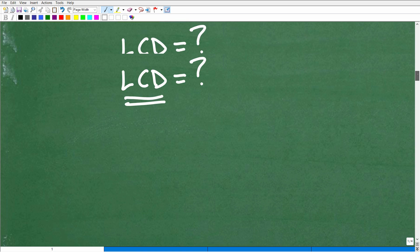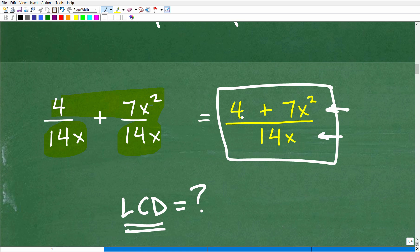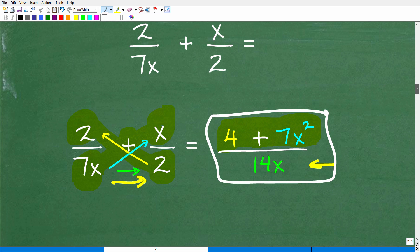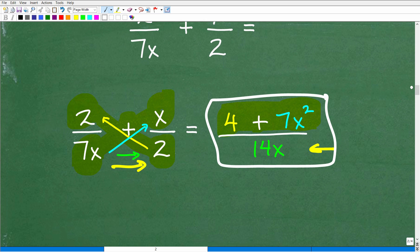Let's go back up here. Here is the answer with the LCD four plus seven X squared over 14 X. And just to kind of prove it to you, it is the same answer. There you go. Okay. But think about how fast this is to do this. It's two times two. That's four plus seven X times X, seven X squared, all over seven X times two or 14 X.